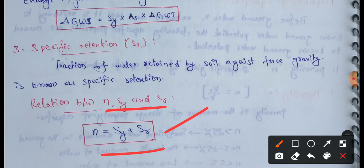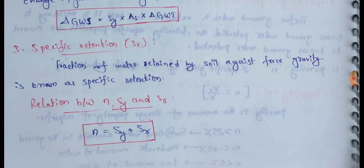Using this formula, if any two values are known, you can find the third. We will use these three properties to find the change in groundwater storage. Problems based on these topics will be discussed in the next video. If you liked this video, please like and subscribe to the channel. Thanks for watching.